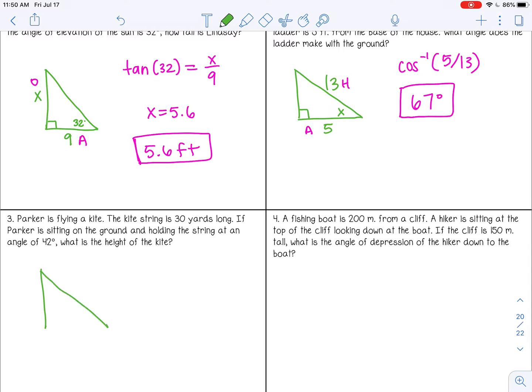In the next example, I'm going to draw my right triangle. Parker is flying a kite. And the kite string is 30 yards long. So kite strings are the hypotenuse. Because kites don't fly straight up in the air like a balloon. Kites fly with the wind. So it's going to be slanted. So it's 30 yards long.